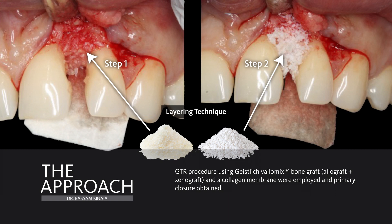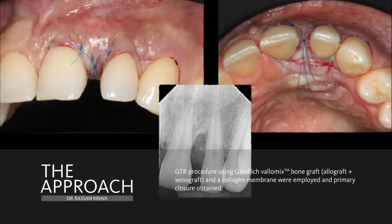We are going to be using a collagen membrane to cover the bone that we have just added to protect it. The internal part of the papilla still had some granulomatous tissue, and we were able to do a partial thickness flap to fill it and cover the bone graft to get primary closure.